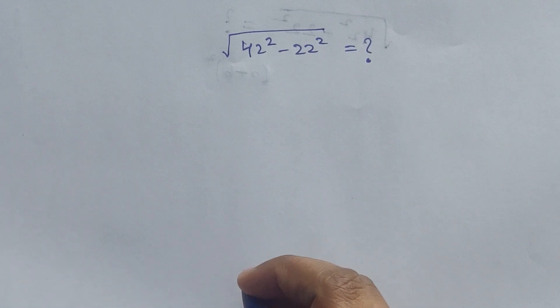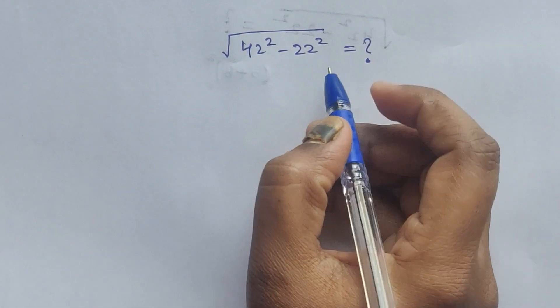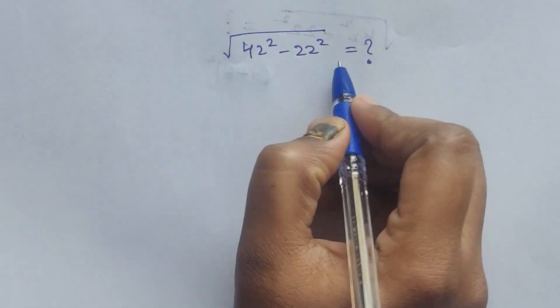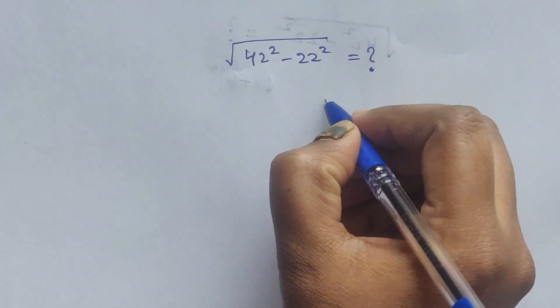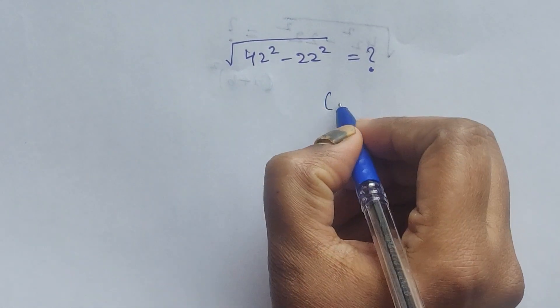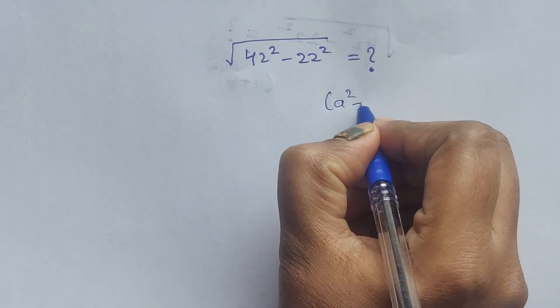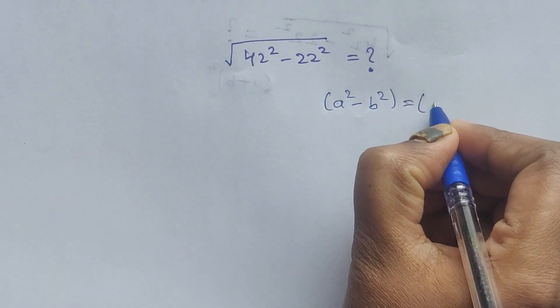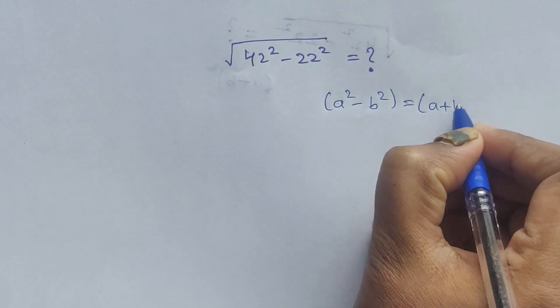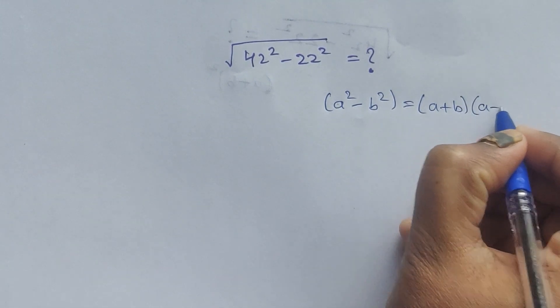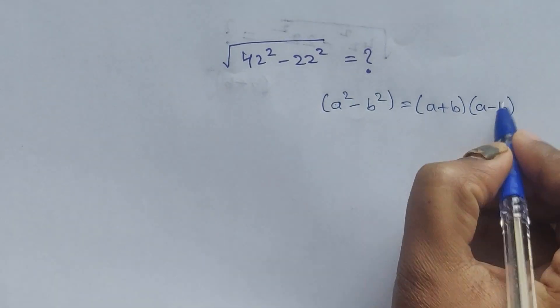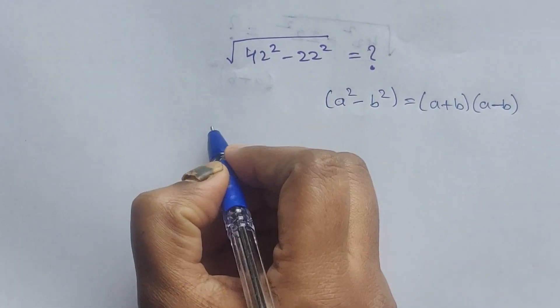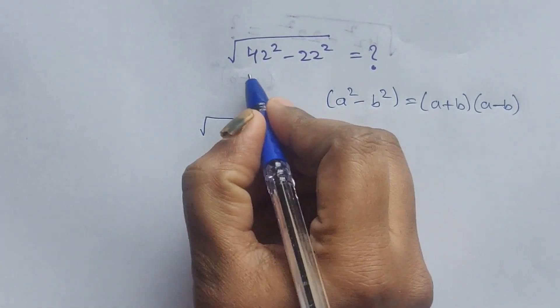Hello everyone. Here we have a problem: how to solve square roots with squares. Follow this formula: a squared minus b squared equals a plus b times a minus b. So I'm going to write this.